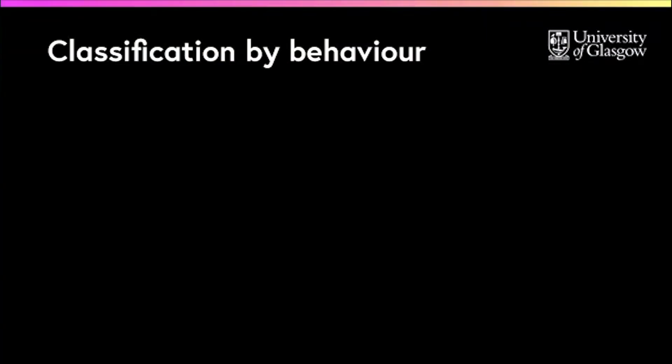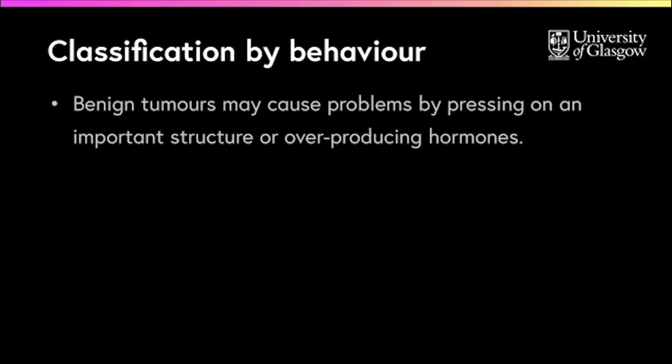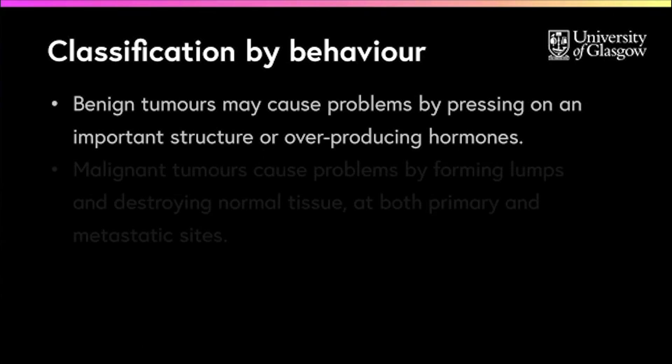If benign tumours cause problems for the patient, it is usually because the tumour is pressing on an important adjacent structure or making more hormones than usual. Malignant tumours cause problems by forming lumps and destroying normal tissue at both primary and metastatic sites.